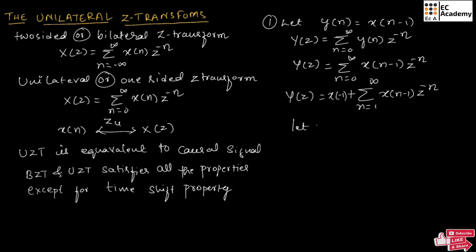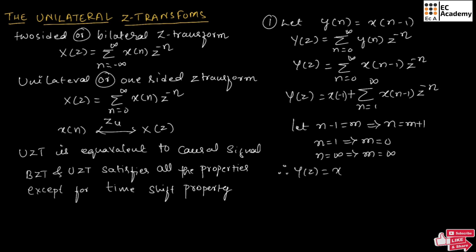Let us take n minus 1 is equal to m. From this, we will get n is equal to m plus 1. If we put n is equal to 1, we will get m is equal to 0. Therefore, we can write Y of Z is equal to X of minus 1 plus, for n is equal to 1, summation of m is equal to 0 to infinity, X of m, Z to the power of minus m plus 1.